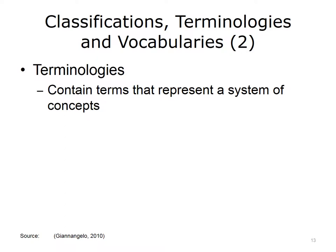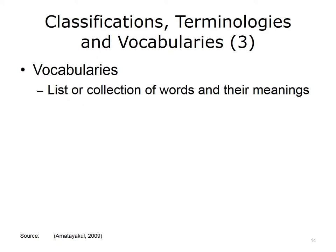In contrast to a classification, a terminology is a set of terms that represent a system of concepts. For example, in a terminology, the term hyperthermia would include the concepts of fever, febrile, and elevated temperature. Vocabularies are lists of words and their meanings, much like a dictionary. It is important to know that while some references define vocabularies as a collection of words with their definitions, others use terminologies and vocabularies as synonyms.